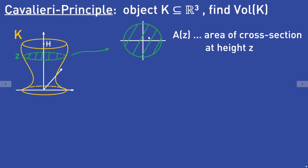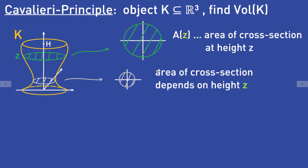You are interested in the area of that green slice plane at height z. That area depends on the height z and we call this area capital A of z — it is the area of the cross section at height z. As I said, this area depends on the height z because if you cut through the object somewhere else the cut surface might change. For example, if you cut through the object K at a different height the cut surface changes, and the area of that cross section can be smaller.